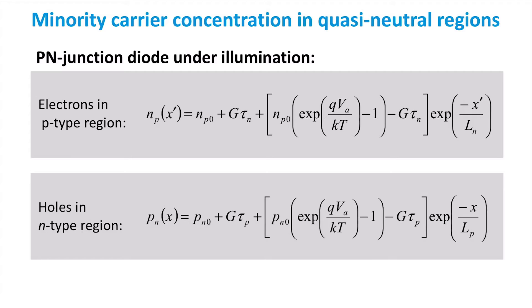It is a very complex equation with many terms. Photo generation rate, applied voltage, and diffusion length all have influence on the minority carrier distribution.